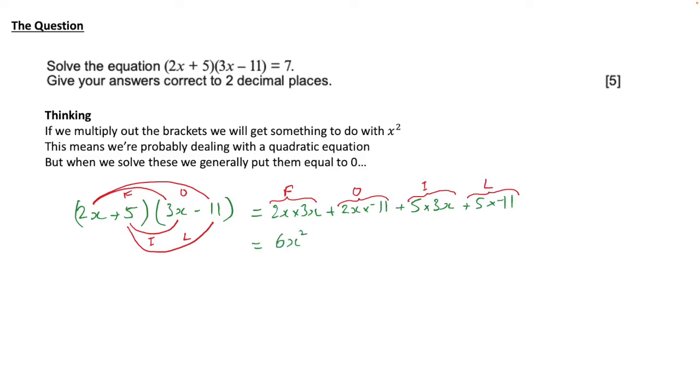So, we multiply 2x by 3x to give us 6x squared, that's 2 times 3 gives us the 6 and the x times x is x squared. 2x times minus 11 gives us minus 22x, 5 times 3x gives us 15x and 5 times minus 11 is minus 55.